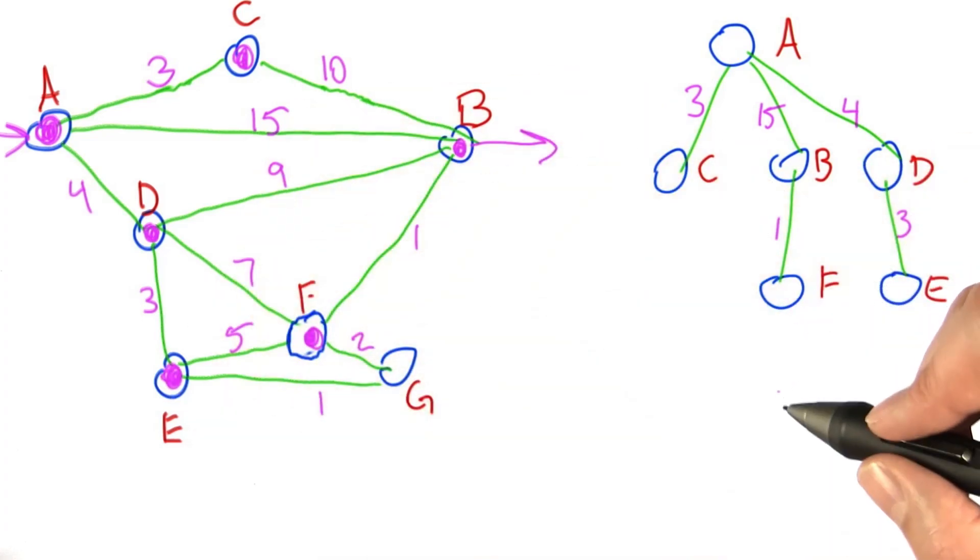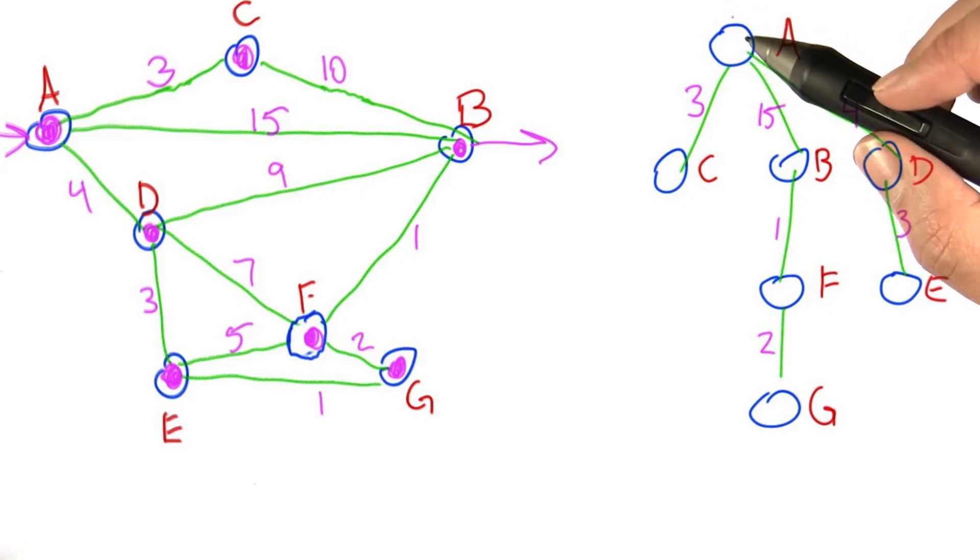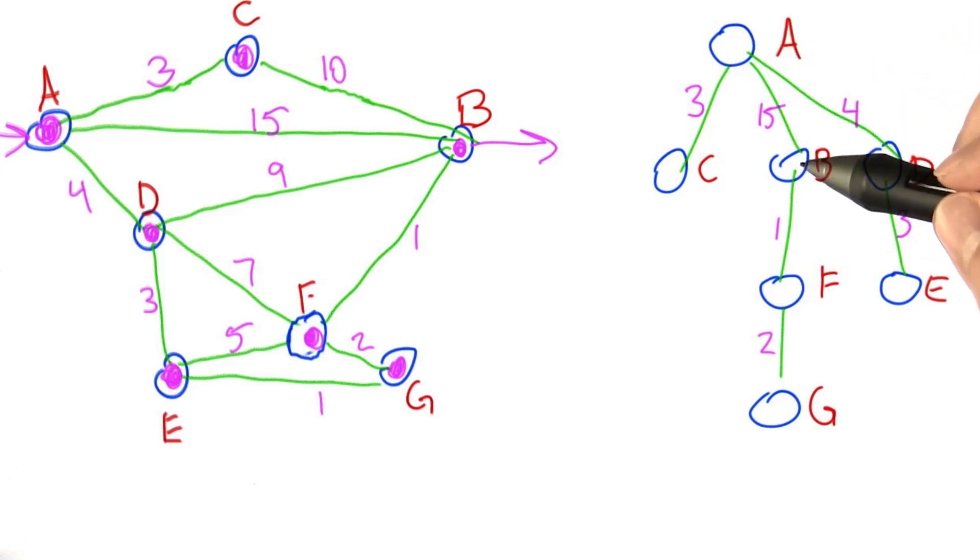Now F's unexpanded neighbors are G, and E has no more unexpanded neighbors, so we've finished this depth-first search. What we get here is that by the assumptions of breadth-first search, the shortest path from A to B is this direct link from A to B. The search would have actually terminated here, but we ran it out anyway.